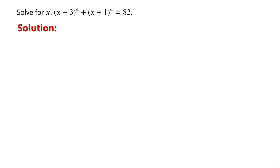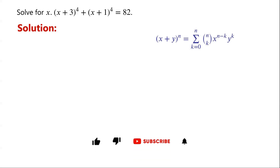By the Binomial Theorem, (X plus Y) to the power of N equals the sum from K equals 0 to N of N choose K, times X to the power of N minus K, times Y to the power of K. We can use the Binomial Theorem to expand the terms, resulting in a standard polynomial equation with a degree of 4. However, solving a degree-4 polynomial is not always easy, so we will use a simpler approach.